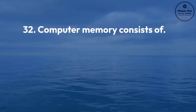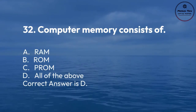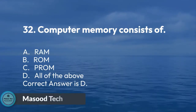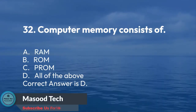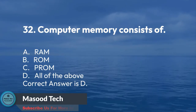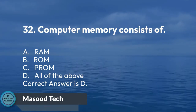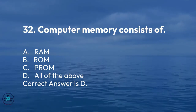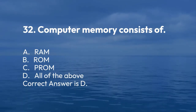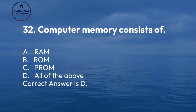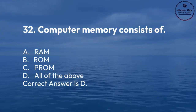Number 32. Computer memory consists of: A. RAM. B. ROM. C. PROM. D. All of the above. Correct answer is D.